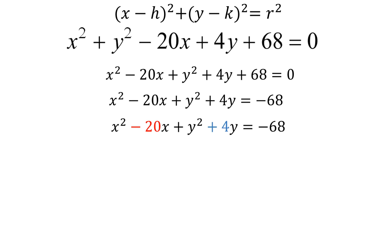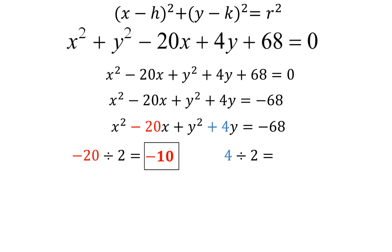From here, I am going to start completing the square. I'm going to take the number in front of my x, which is negative 20, and divide that number by 2 — I get negative 10. I'm going to put a box around that number because it is very important. Then I'm going to do the exact same thing with the number in front of y, which is 4: 4 divided by 2 equals 2, and I put a box around that number as well.